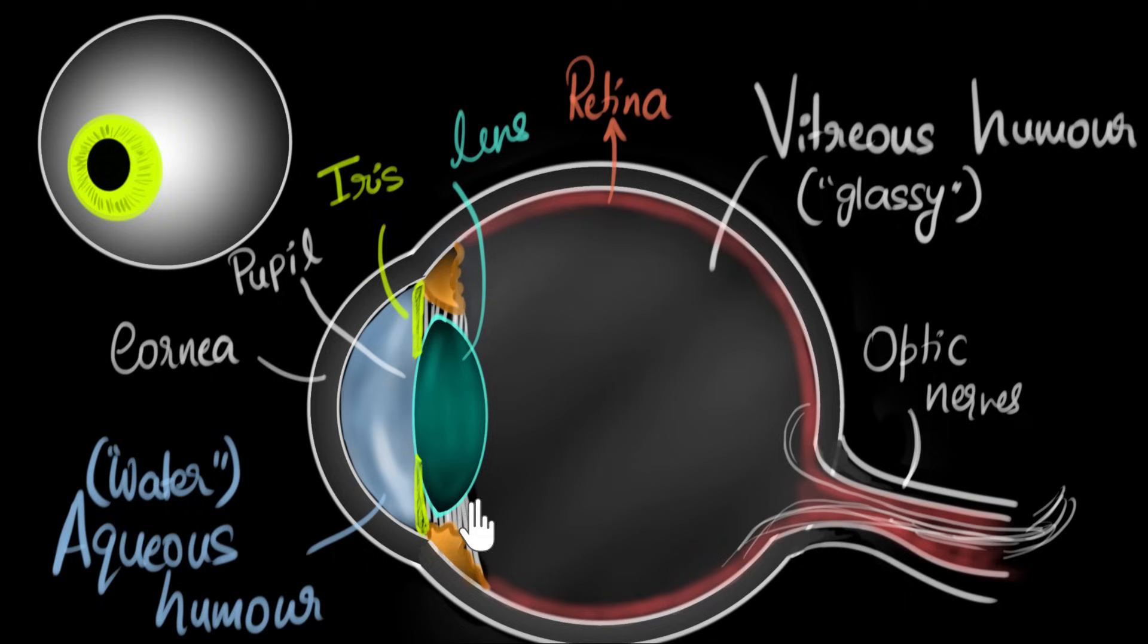And the last thing we'll talk about are these fiber kind of things that we see over here, which are keeping our lens in place. They are called the ciliary muscles. They have a pretty important job too. Their job is to be able to change the shape of this eye lens.